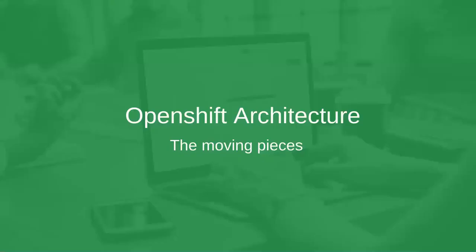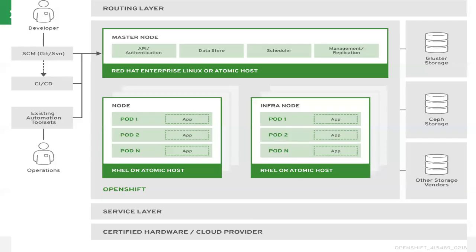When it comes to the architecture part, there is a master-node architecture. In OpenShift 4, there is a three-node architecture — a three-master, three-node architecture that we can build.